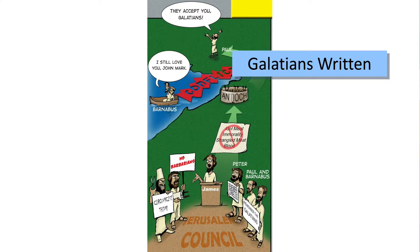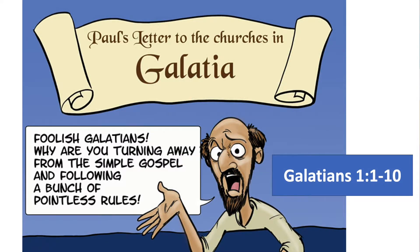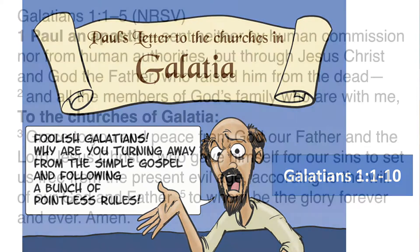Then Paul and Barnabas part ways. This is where many scholars believe that Paul writes the letter to the Galatians — just after this big decision at the Jerusalem council. Now let's jump into Galatians. In chapter 1 verses 1 through 10, Paul is basically saying, 'You foolish Galatians, why are you turning away from the simple gospel and following a bunch of pointless rules?' Let's dive into the text.